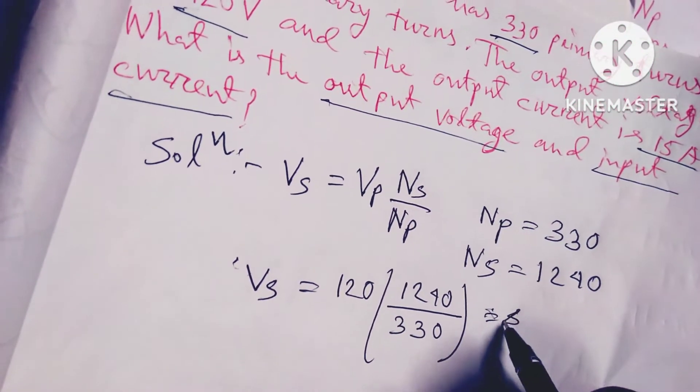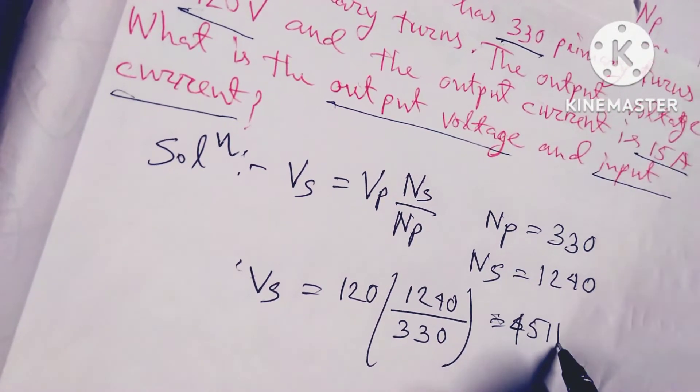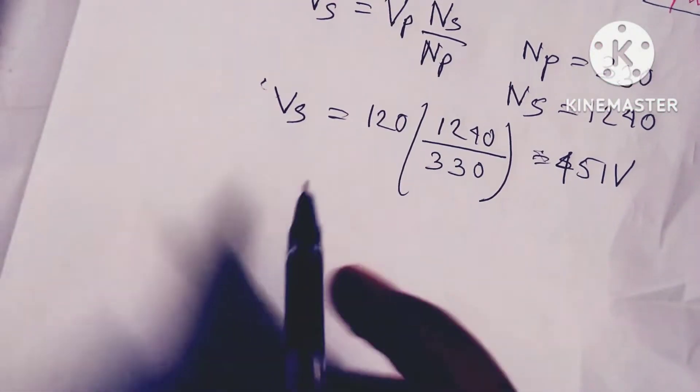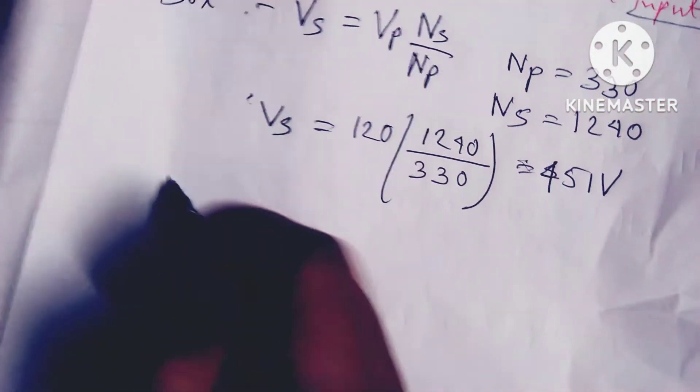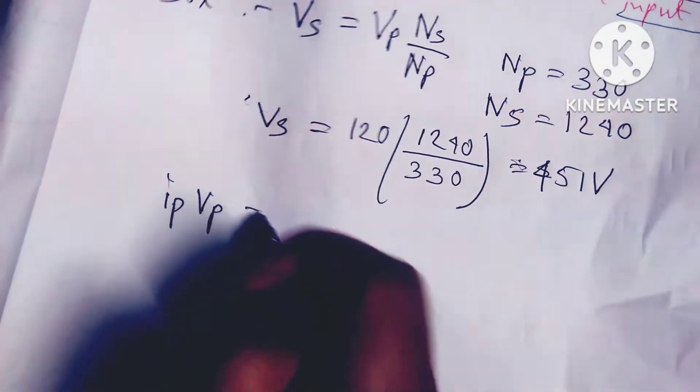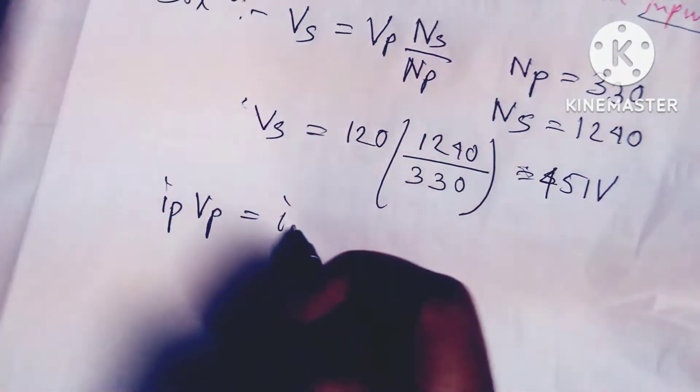451 volts. And now you have to know Ip. Vp equals... Ip times Vp equals Is times Vs.